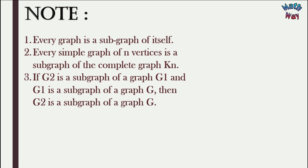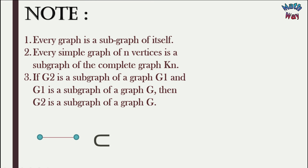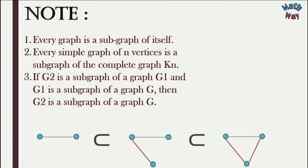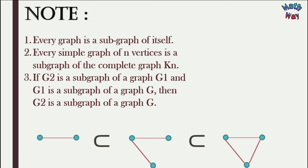Number three: if G2 is a subgraph of G1, and G1 is a subgraph of G, then G2 is a subgraph of G. Consider this graph as G2, which is a subgraph of G1, and G1 is a subgraph of G. You can see that G2 is also a subgraph of G.